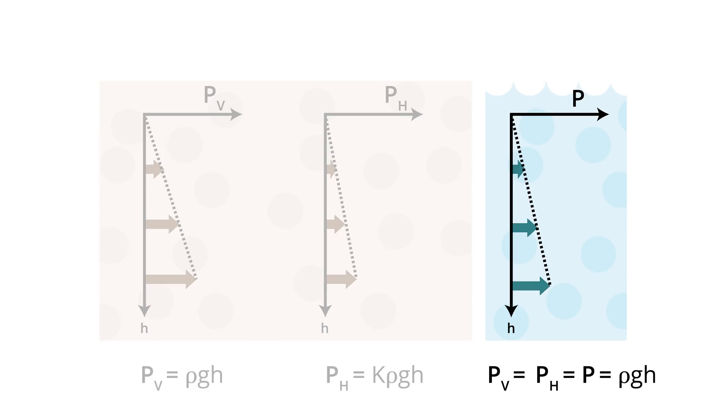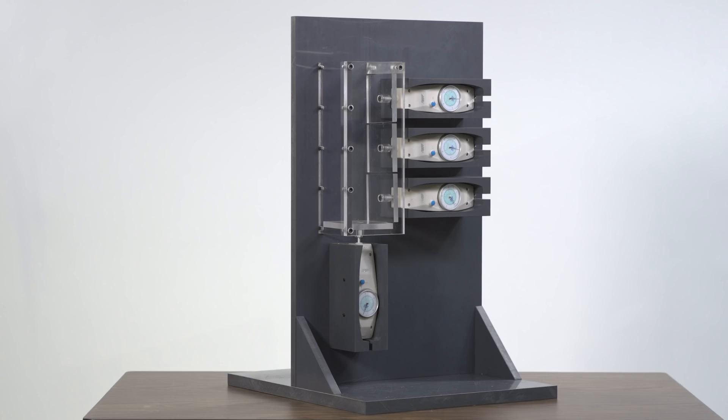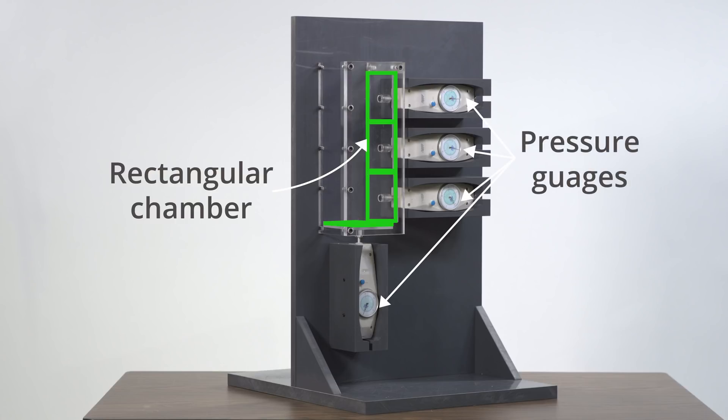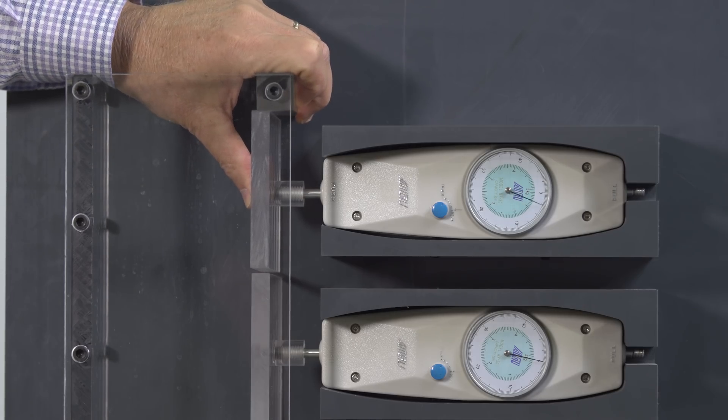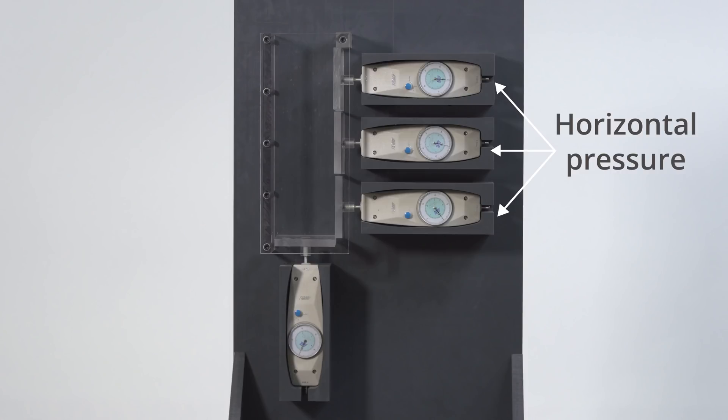We can observe the pressures produced by granular materials and liquids by using this custom-made apparatus. It consists of a rectangular chamber with square windows attached to force gauges at three different depths along the side and one window and force gauge at the bottom. The gauge readings allow us to determine the horizontal pressure at three elevations along the side of the chamber and the vertical pressure at its bottom.